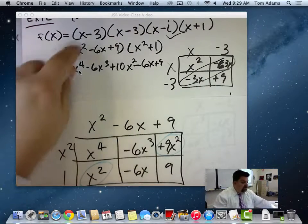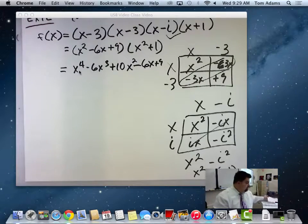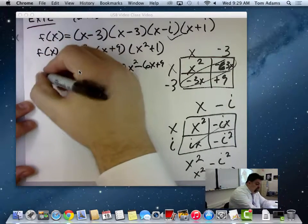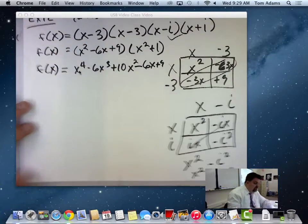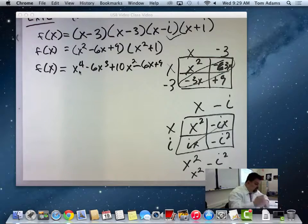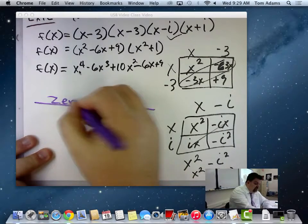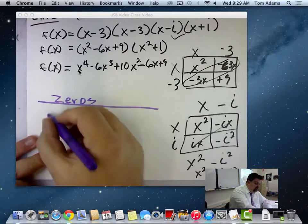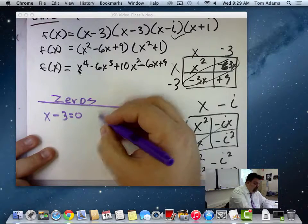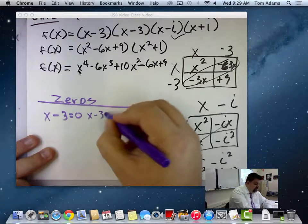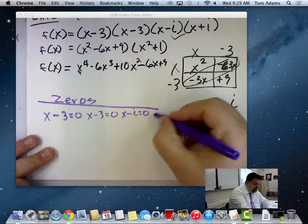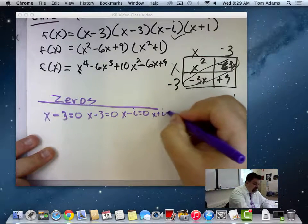So all this stuff here is going to be x to the fourth minus 6x cubed plus 10x squared minus 6x plus 9. Now, by looking at this, if I go back to the factor, prime factorization, what are my zeros? Well, my zeros occur when each factor is set equal to zero. So I'm going to do that in a different color because this is what they asked us to do. They asked us to find the zeros. Well, the zeros are when x - 3 equals zero, when x - 3 equals zero, which will be the same thing, and then when x - i equals zero and when x + i equals zero.